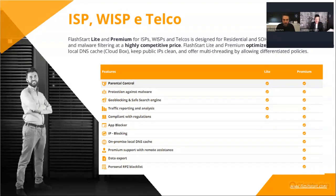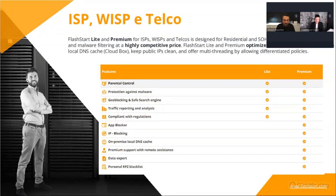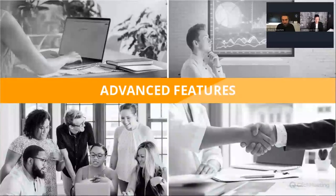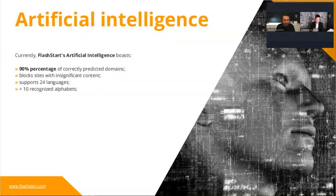The second product line is dedicated to internet service providers, ISPs, and telcos. We have two versions: Light and Premium. The ISP version is a global protection added to your connectivity lines — it's not multi-tenant — and it adds a DNS security layer to your connectivity lines.